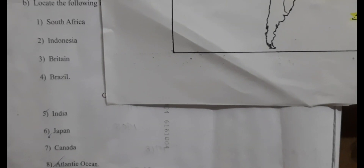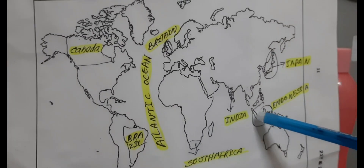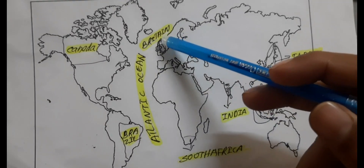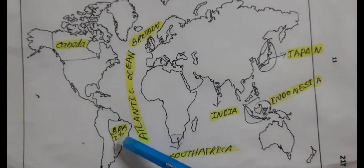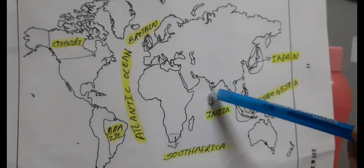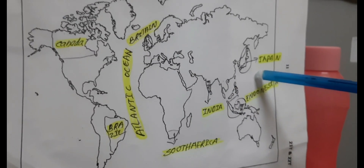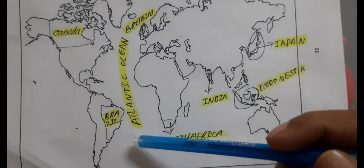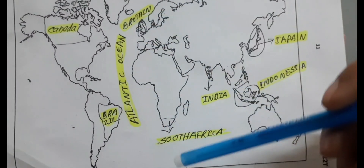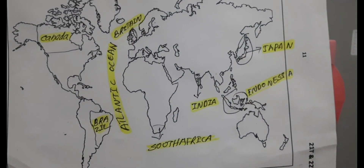Question 33B: Locate the following on the outline map of the world — South Africa, Egypt, Africa continent, Indonesia, Britain, China, Europe, Brazil in South America, India, Japan, Pacific Ocean, Canada, Atlantic Ocean, and Antarctica. Any four answers will get four marks.